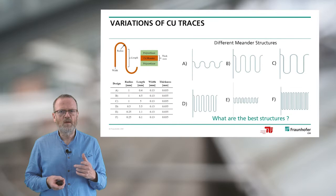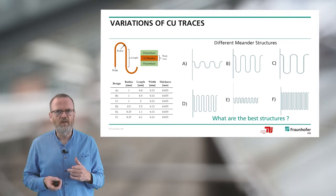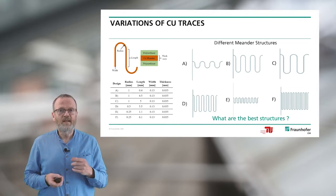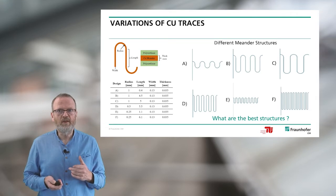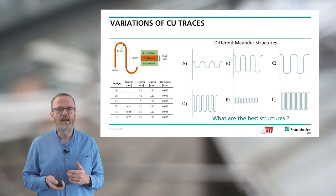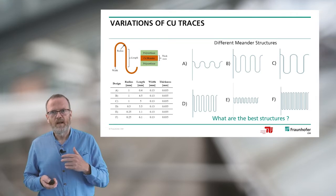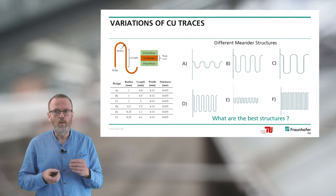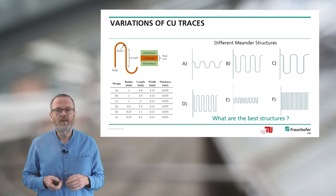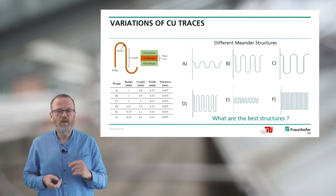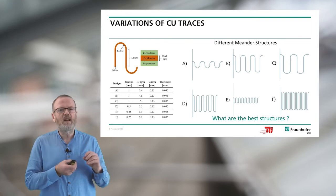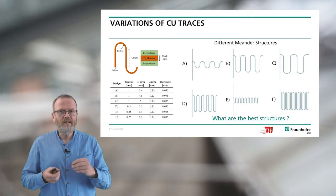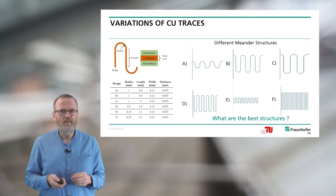This is the focus of this talk: what is the best structure for copper traces? You can see here six different geometries of copper meander. They have a variation of radius, a variation of length, and a variation of amplitude. The question is, for the specific application, what is the best structure of copper inside the polymer system?